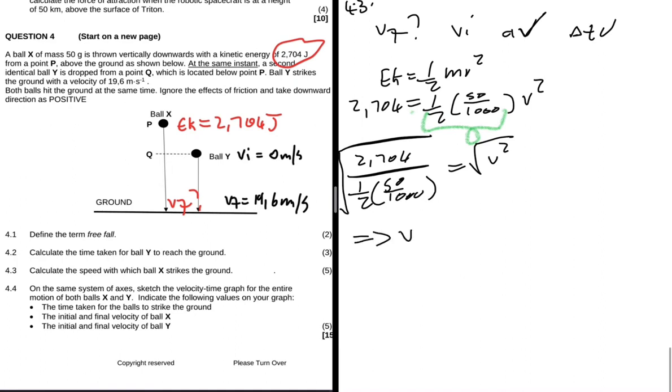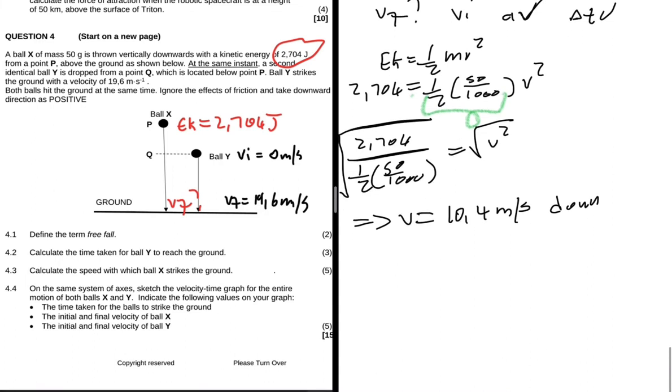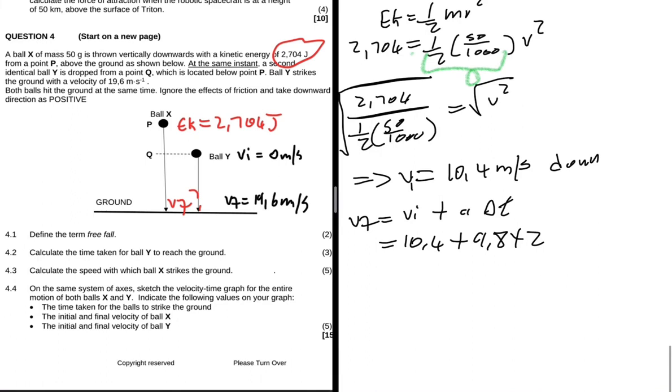You will end up getting a velocity of 10.4 meters per second, and we know it's supposed to be going down. Now we have our vi and we can determine vf. vf equals vi plus a delta t. We know now that vi is 10.4, acceleration is 9.8 because we've taken down as positive, and the time is 2 seconds.